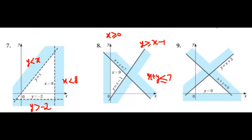And the ninth question — here we can see the unshaded region. Just look at this line: the unshaded region is on the downward side, so this inequality will be y is less than equal to x plus 2. And from this line, the unshaded region is on the downward side again, so the inequality will be x plus y less than equal to 6.